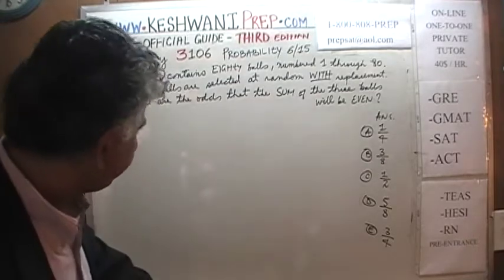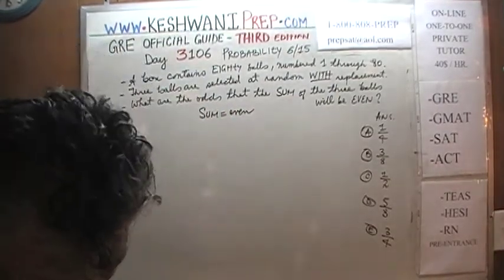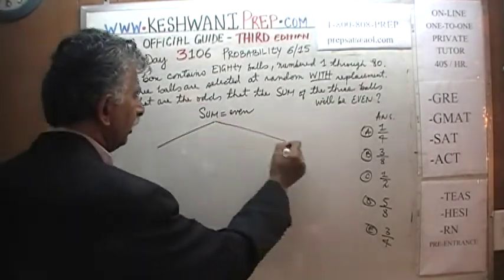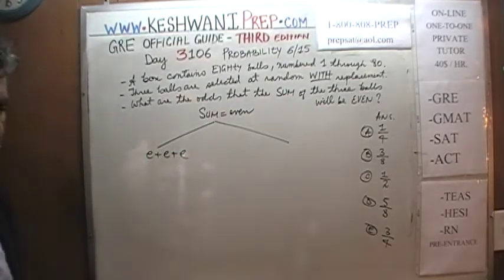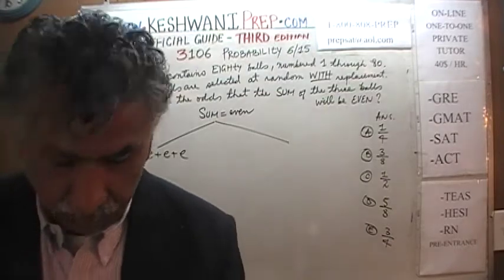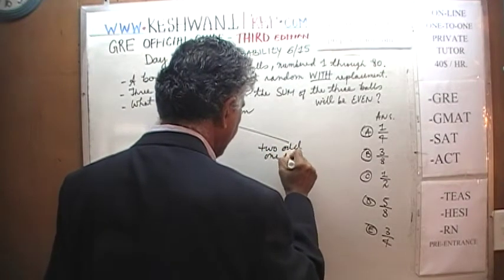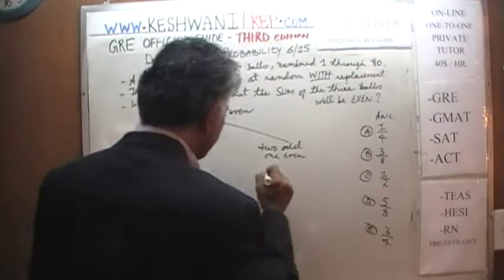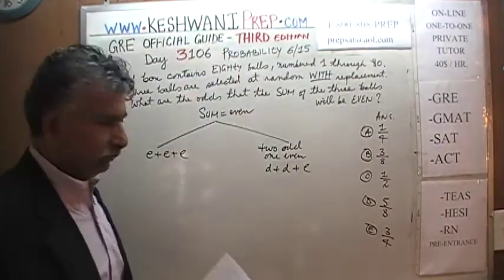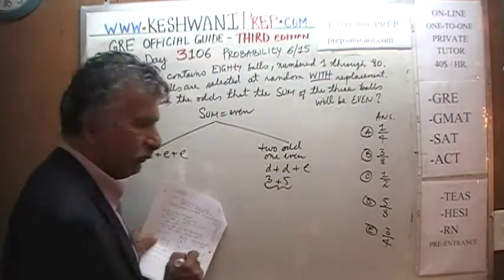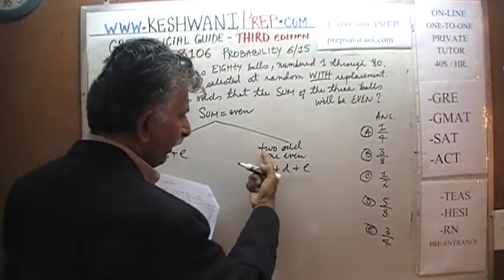Let's take a look at it. We want the sum to be even. There are essentially two ways to achieve that out of three numbers. One is that you happen to select all three numbers that are even — when all three numbers are even, their sum is going to be even. Or we can have two odd numbers and one even, for example odd plus odd plus even, because odd plus odd becomes even, and even plus even remains even.